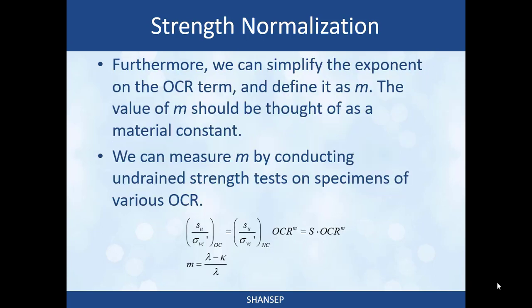We can also simplify the exponent on the OCR term. It's previously been lambda minus kappa divided by lambda, but we can lump those constants together and define a single constant M. So instead of having to compute two different constants, now we only have to compute one. The value of M is also a material constant that can be measured in the laboratory by conducting undrained strength tests on specimens with various over-consolidation ratios and regressing using a natural logarithm transformation.